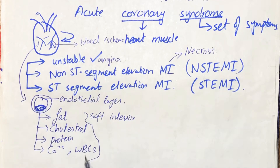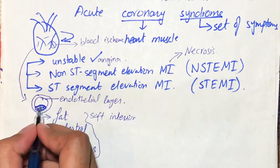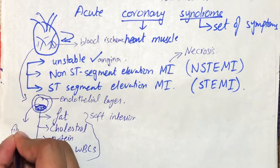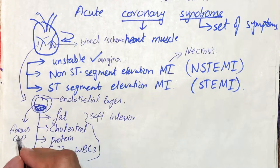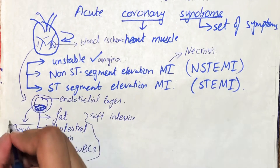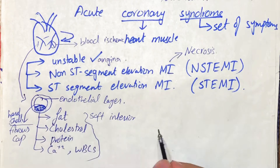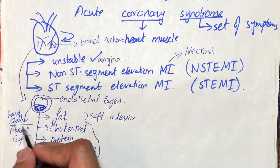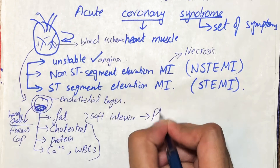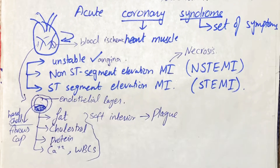Over this soft area there is a hard shell or hard capsule called the fibrous cap, which covers the substances beneath it. Both of these things — the soft interior and the hard shell — combine to form a block, and this whole structure is called plaque formation. The block is not formed at once; it takes many years to form.